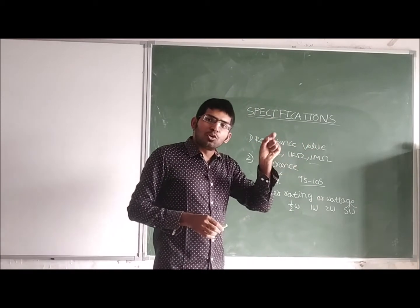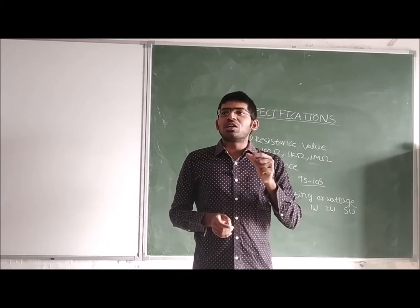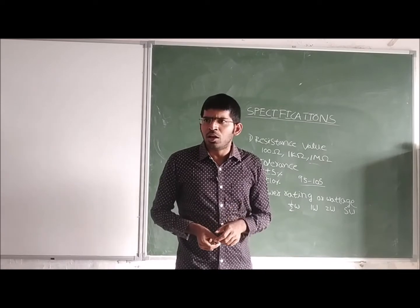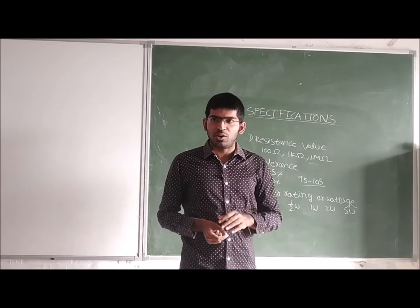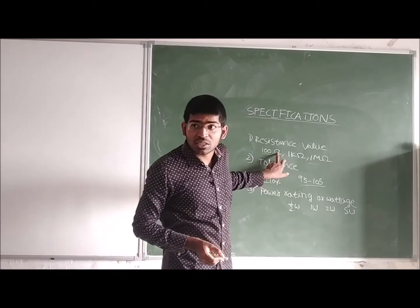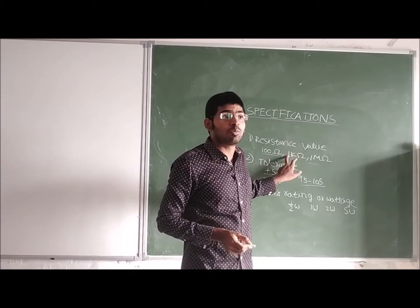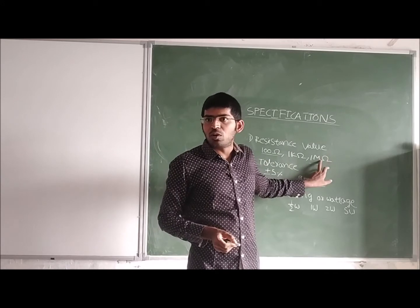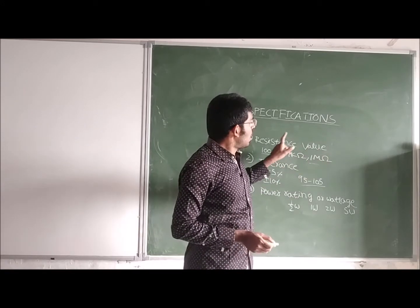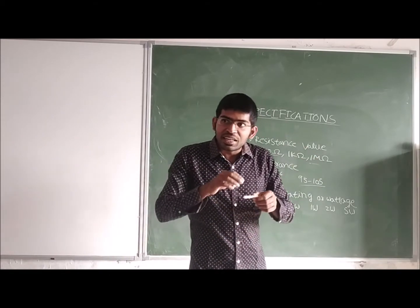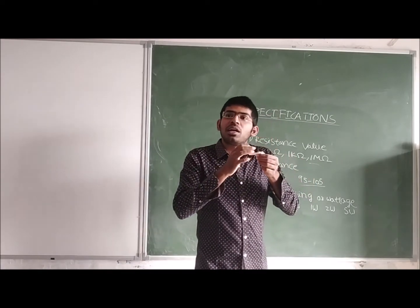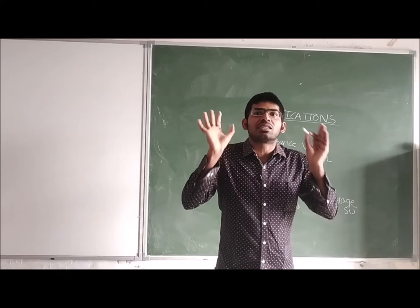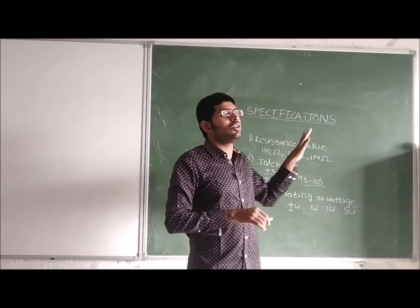We already know what a resistor is, but when we go to the shop and ask for a resistor, the shopkeeper asks: what is the resistance value? The resistance of a resistor is measured in ohms. 1 kilo ohm is equal to 1000 ohms, and 1 mega ohm is equal to 10 to the power 6 ohms. The resistance value of a resistor is indicated on the resistor itself — either the value is printed on it or it is indicated with a color code. Based on the color, we can recognize the value of that resistor.